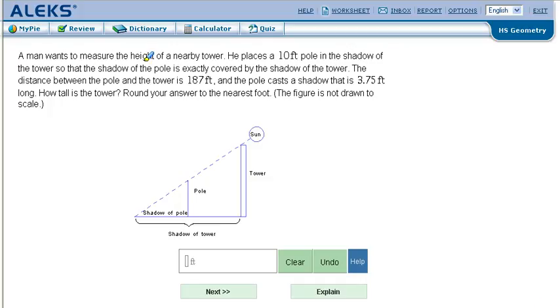It says a man wants to measure the height of a nearby tower. He places a 10-foot pole in the shadow of the tower so that the shadow of the pole is exactly covered by the shadow of the tower. That means they overlap.